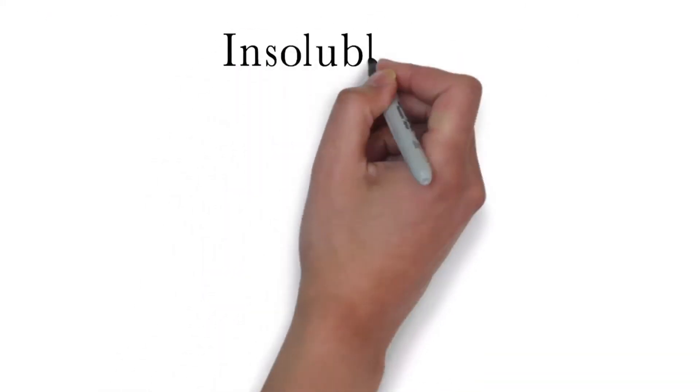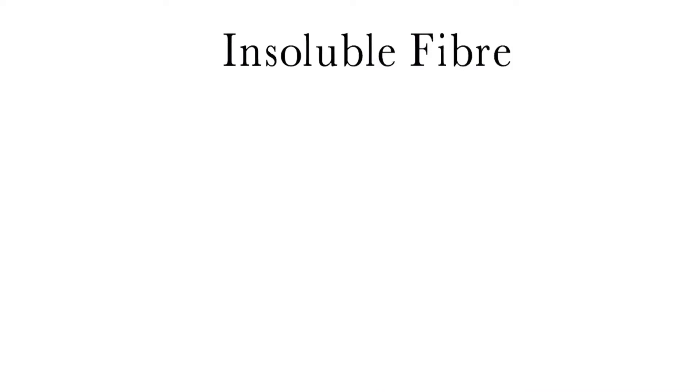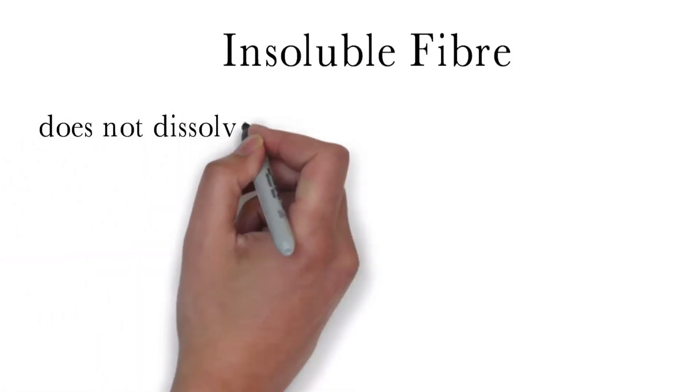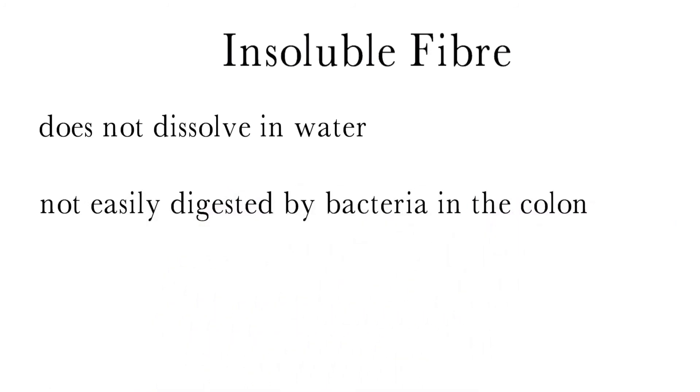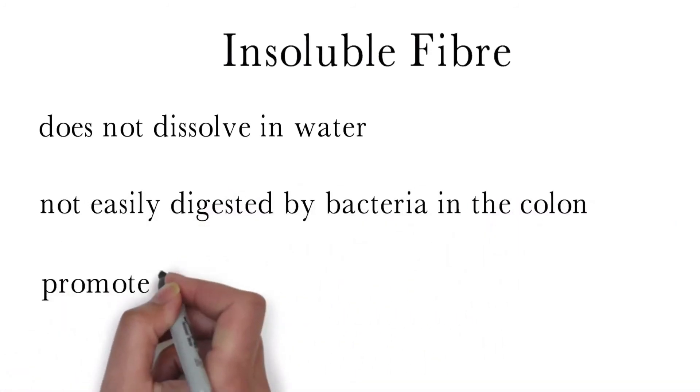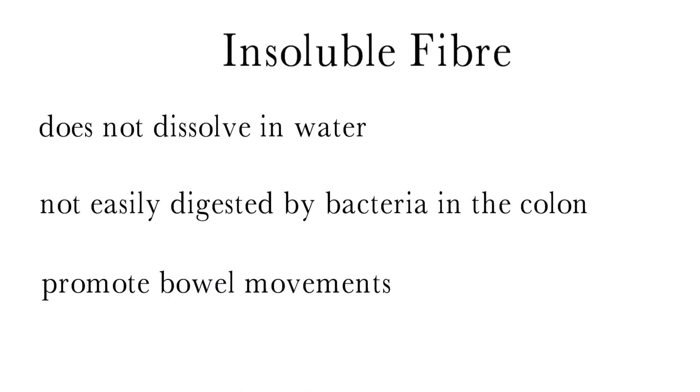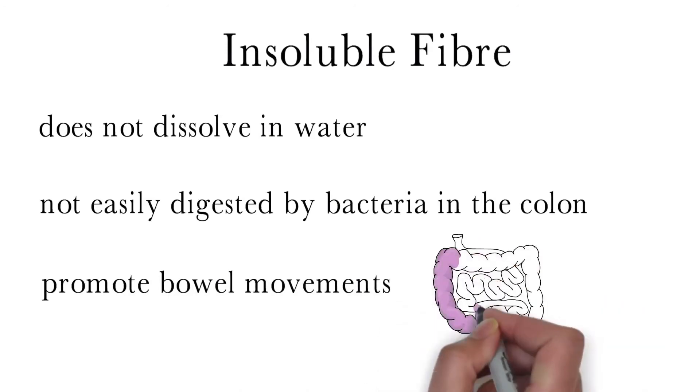Insoluble fiber is the second type of fiber. Unlike soluble fiber, it cannot be dissolved in water, and it is not easily digested by the bacteria living in our colon. Insoluble fiber mostly passes through us undigested. It assists in promoting bowel movements and alleviating constipation.